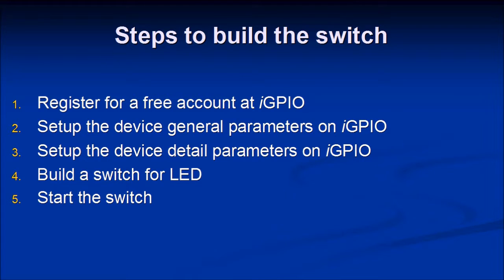The five steps you'll need to build the switch are: register for a free account at the IGPIO website, set up some device general parameters at IGPIO, set up some detailed device parameters at the IGPIO website, actually build the switch with the Raspberry Pi and the LED, and then start and run the program on the Raspberry Pi.